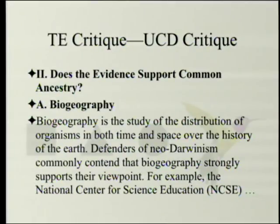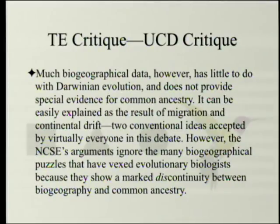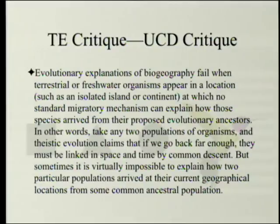Biogeography is the study of the distribution of organisms in both time and space over the history of the Earth. Defenders of neo-Darwinism commonly contend that biogeography strongly supports their viewpoint. However, much biogeographical data has little to do with Darwinian evolution and does not provide special evidence for common ancestry — it can be easily explained by migration and continental drift. However, the NCSE's arguments ignore many biogeographical puzzles that have vexed evolutionary biologists because they show a marked discontinuity between biogeography and common ancestry.